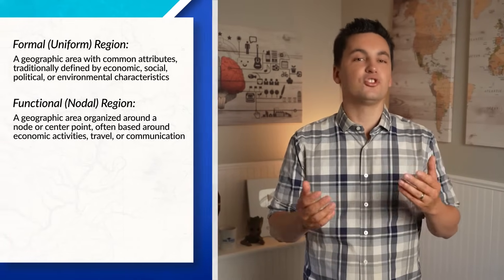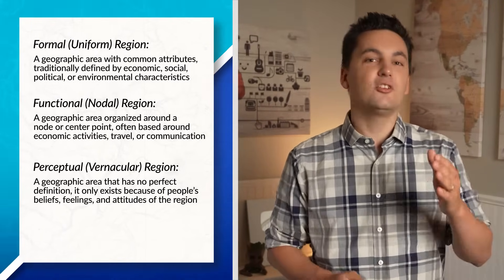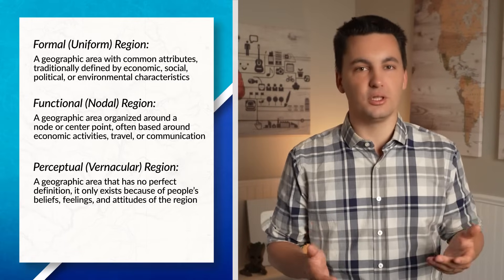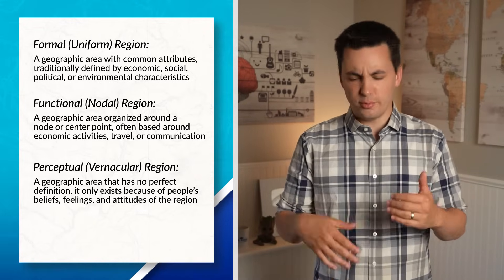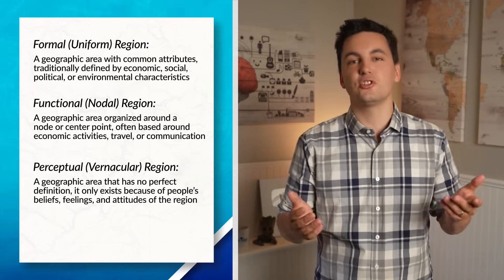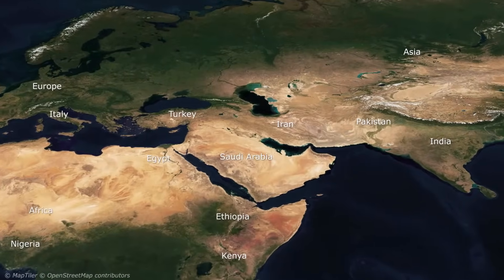The last type of region is a perceptual region, which is a geographic area that has no perfect definition. It exists only because of people's beliefs, feelings, and attitudes about the region. These regions are often in a person's mind, which makes it hard to have set boundaries. For example, what countries are in the Middle East? Would you include parts of northern Africa, or just countries on the Arabian Peninsula? If you asked your classmates, you'd find some similar answers, but everyone would likely have a different idea of which countries belong.